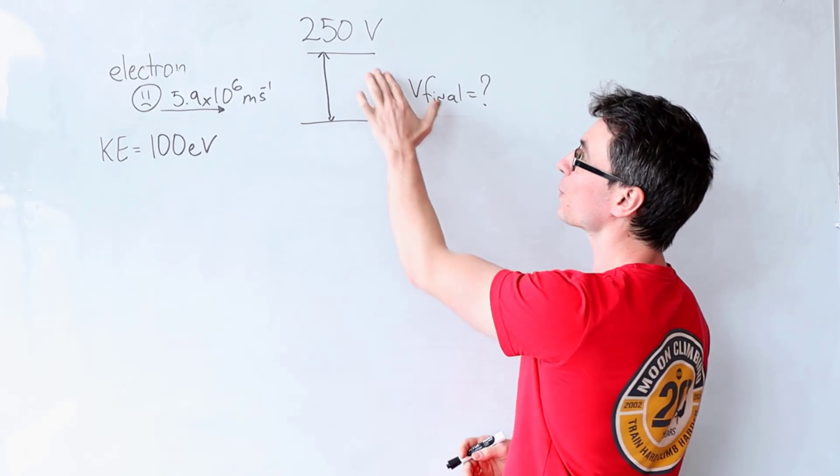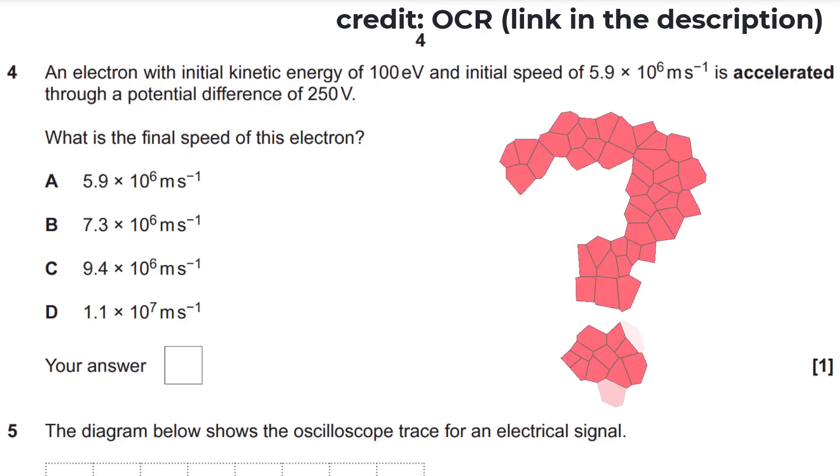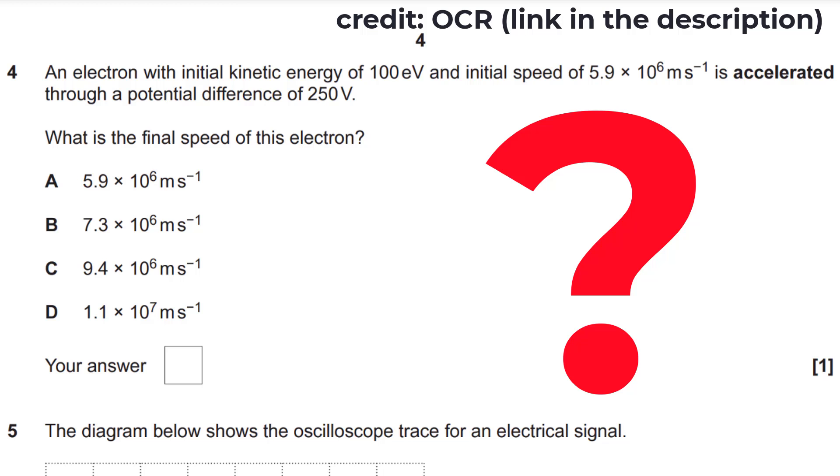The electron is then accelerated through this region of 250 volts. We need to find the final speed of this electron.